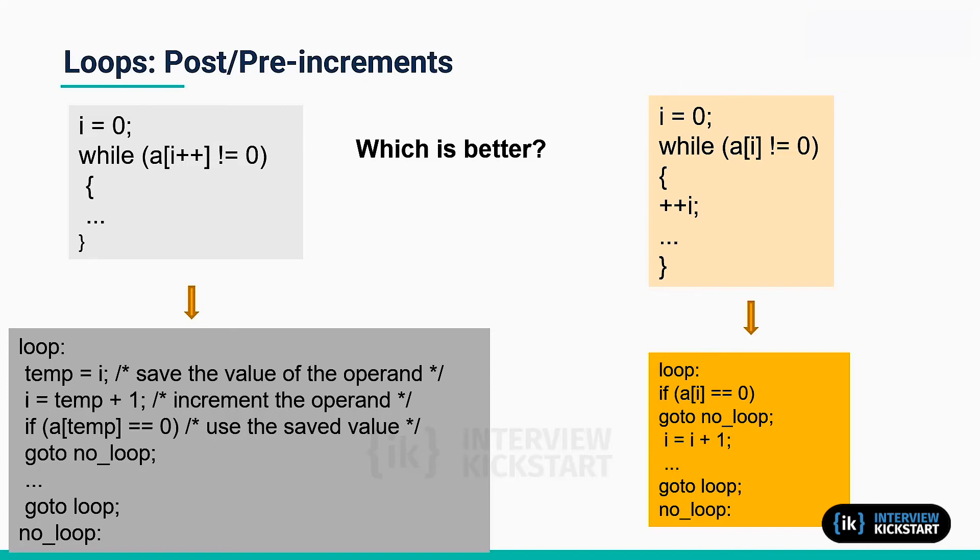While it is fairly common that microcontrollers have an addressing mode that can increment a pointer after a load or store operation, very few microcontrollers can handle post-increment of non-pointer types with the same efficiency. They need to use a temporary variable. To comply with the standard, the compiler may have to copy the operand to a temporary variable or register before doing the increment.